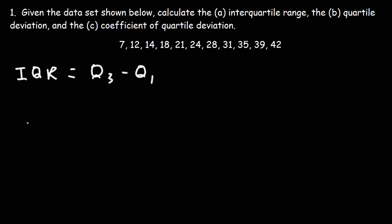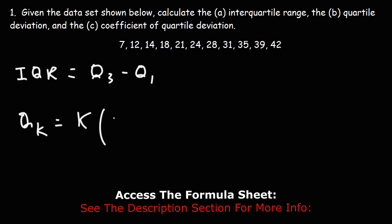And here it is. QK is equal to K times N plus 1 over 4. And this will give you the term that will lead to that quartile.